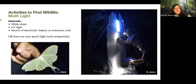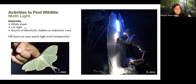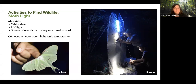Moth lights are a good way to learn more about night insects. Our setup at Floracliff is more elaborate, but you can do it with just a white bed sheet — preferably with natural fibers — and a UV black light party light. You'll also need a source of electricity, either a battery or an extension cord. You can leave a porch light on, but we recommend only doing that temporarily, not indefinitely, as artificial lighting can disorient wildlife.